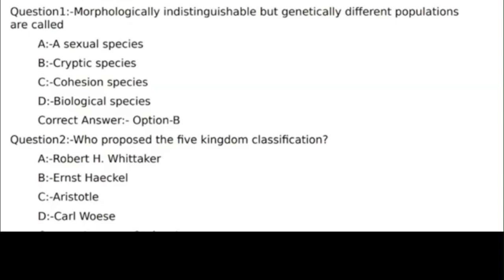Second question: Who proposed the five kingdom classification? Answer options: Option A, Robert H. Bittaker; Option B, Ernest Haeckel; Option C, Aristotle; Option D, Carl Woese. Correct answer: Option A, Robert H. Bittaker.